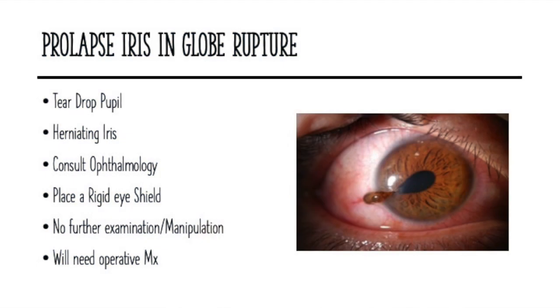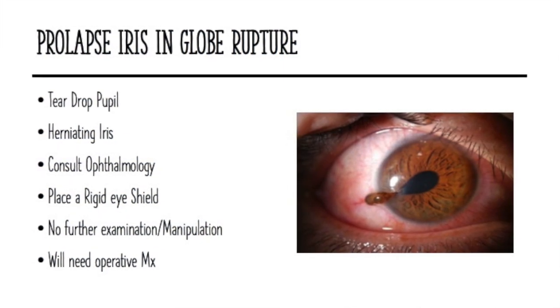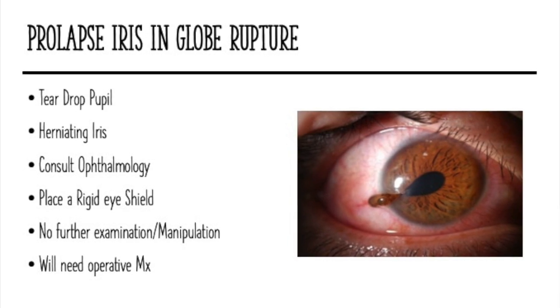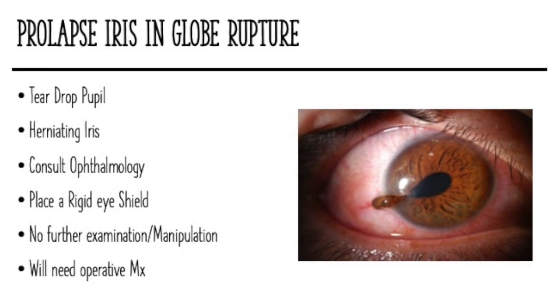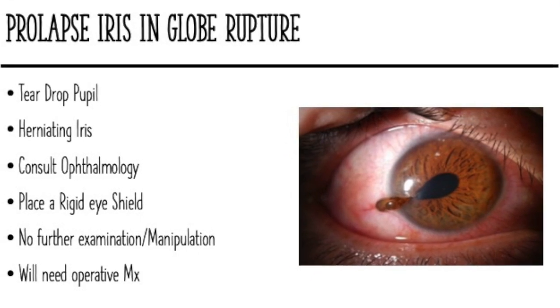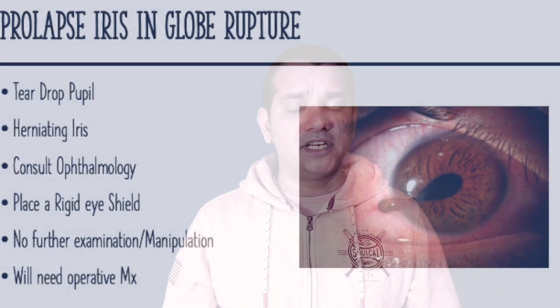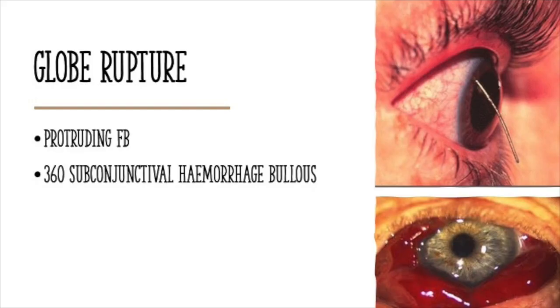A prolapsed iris is an obvious sign of globe rupture. In this image you can see a teardrop pupil and a herniating iris at the limbus. What you do is consult ophthalmology and place a rigid eye shield — do not perform any further examination or manipulation, as this will need operative management. In the next image you see a protruding foreign body, and below that a 360-degree bullous subconjunctival hemorrhage, both directing you toward a diagnosis of globe rupture.